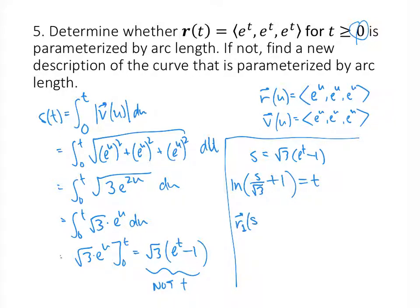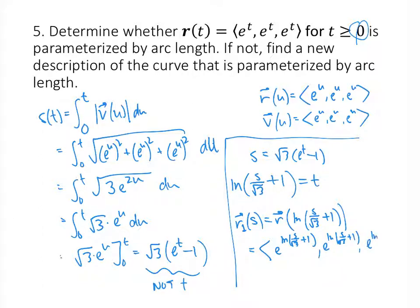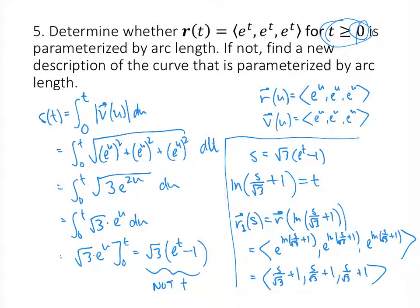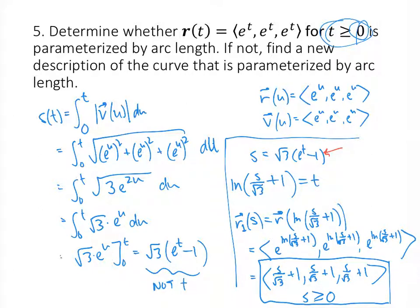The new description of the curve r₁(s) is the original r with t = ln(s/√3 + 1) substituted in. Each component is e raised to ln(s/√3 + 1), and since e and ln cancel, each component simplifies to s/√3 + 1. So r₁(s) = (s/√3 + 1, s/√3 + 1, s/√3 + 1). The original curve had t ≥ 0; plugging t = 0 into s = √3(eᵗ − 1) gives s = 0, so this parameterization is valid for s ≥ 0. This new parameterization is parameterized by arc length.